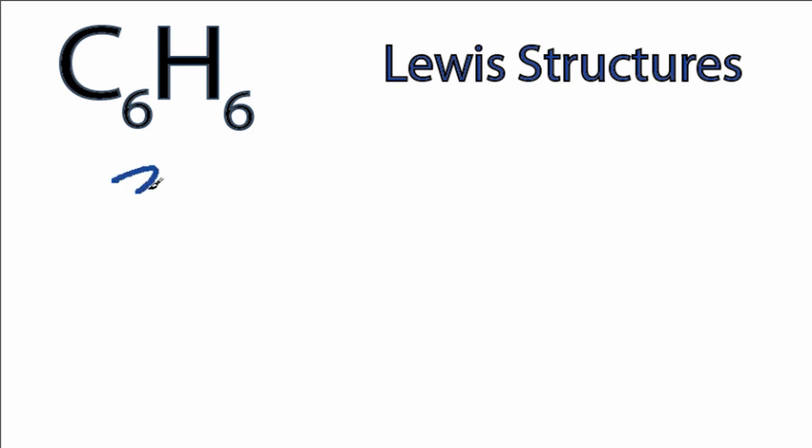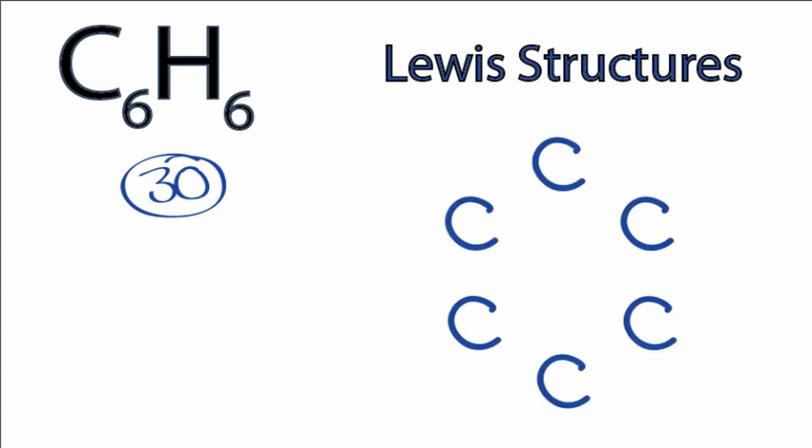So we have a total of 30 valence electrons to work with. For benzene, we're going to put the carbons in a ring structure. Then we'll put the hydrogens outside of the carbons.